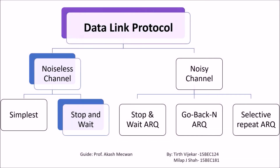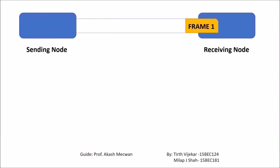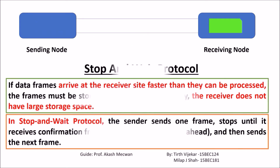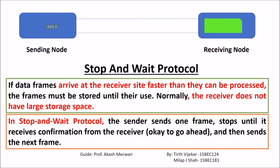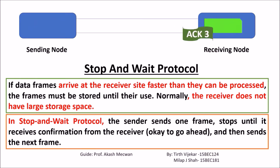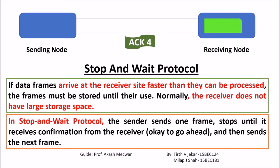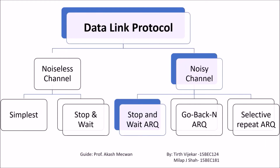Let's see another protocol in the noiseless channel, which is Stop and Wait. In the Stop and Wait protocol, after a successfully received frame, the receiver will send an acknowledgement to the transmitter. After receiving the acknowledgement of the previous frame, then and only then the transmitter will send the next frame, as seen in the animation. If data frames arrive at the receiver faster than they can be processed, they must be stored, but normally the receiver does not have large storage space.